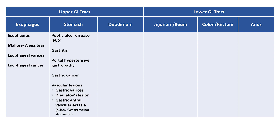In the duodenum, we have peptic ulcer disease as well, duodenitis caused by either infectious or non-infectious pathology, or vascular lesions called angiodysplasia, which are focal collections of dilated, thin-walled veins that are separated from the lumen by endothelium alone. A common synonym for angiodysplasia is arteriovenous malformation, or AVM.